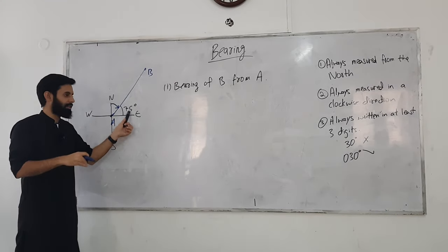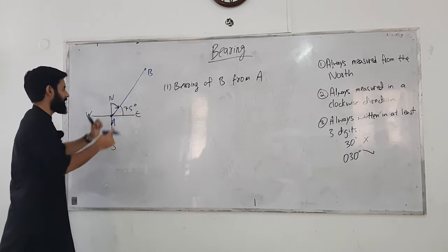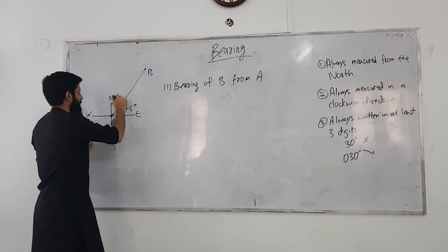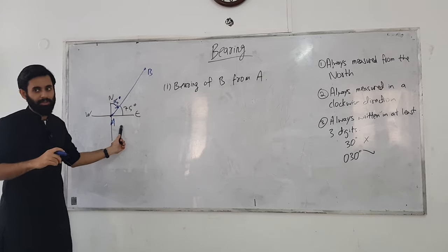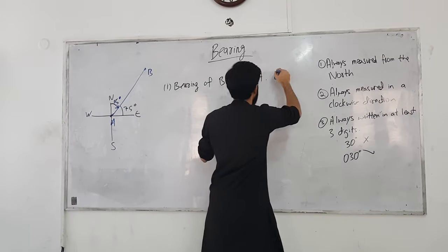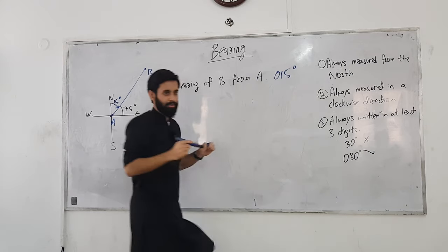So, if this is 90 and part of it is 75, so this will be 15 degrees. Alright, if this is 15 degrees, so that means the bearing of B from A is 15 degrees. But how will we write it? We will write it as 015 degrees.